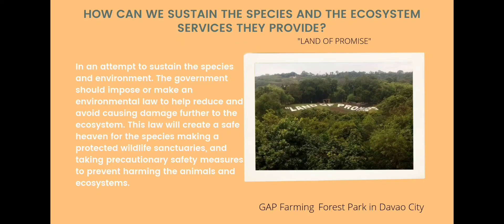How can we sustain species and the ecosystem services they provide? Governments should impose environmental laws to help reduce and avoid causing further damage to the ecosystem. These laws will create safe havens for species, making protected wildlife sanctuaries and taking precautionary safety measures to prevent harm to animals and ecosystems.